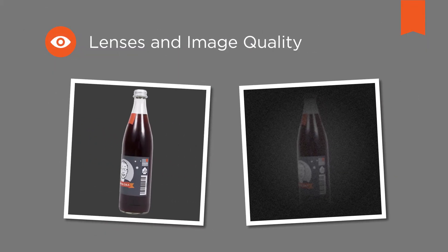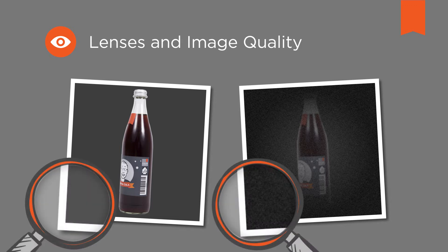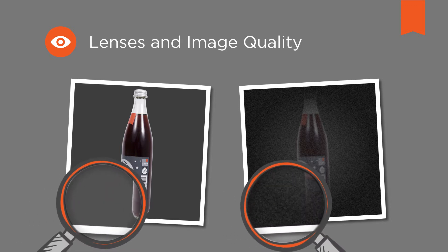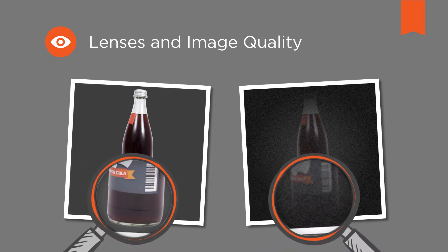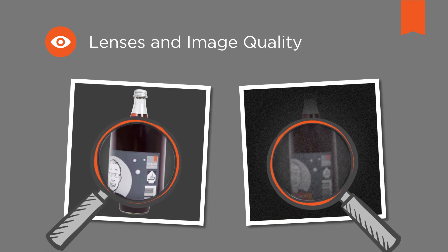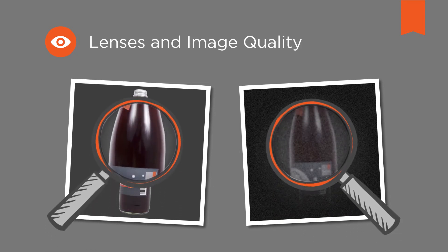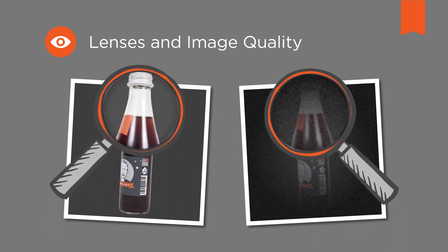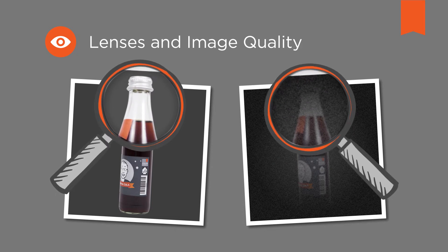Welcome to the Vision Campus. In a vision system, lenses play a key role in image quality. A good primary image is the precondition for high quality and stable image evaluation, because software can't reliably evaluate an image that is not captured correctly.